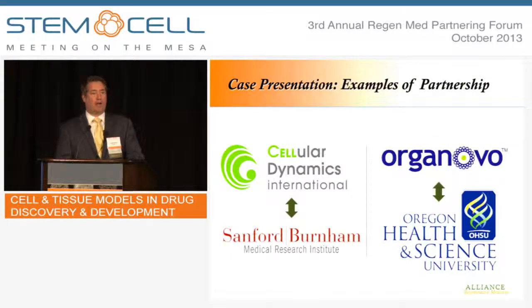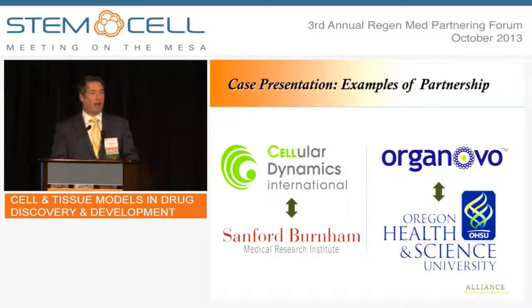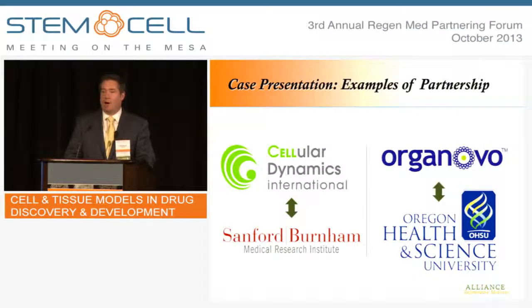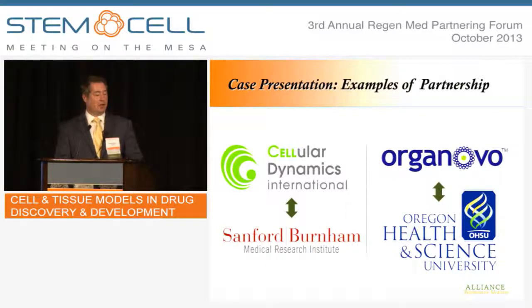We have a number of folks here to talk about this process in application, and we're going to walk through two case studies. The first is Cellular Dynamics — a well-known company, newly public from their recent IPO this summer. They're developing induced pluripotent stem cell technologies through their iCell product line, working with companies to use these in the research space for drug discovery and development. They partner with Sanford Burnham Medical Research Institute. Dr. Ann Bang is going to speak about her use of that at the Prebys Center at Sanford Burnham. I'll be talking about Organovo's 3D bioprinting technology, and we have Dr. Joe Carroll from Oregon Health and Science University — Organovo's 3D bioprinting is in use there in cancer research.